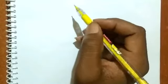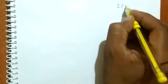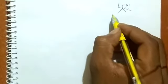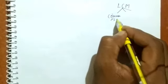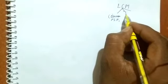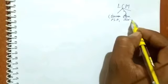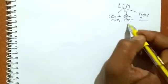Hello students. In this video we will study Exercise 8C of Chapter 8. In this exercise we have to find out the LCM. There are three methods to find out the LCM: the first one is the common multiple method, the second one is the common division method, and the third one is the prime factor method. I have already discussed these methods in the previous video — you can watch it, and the link will be given in the description.